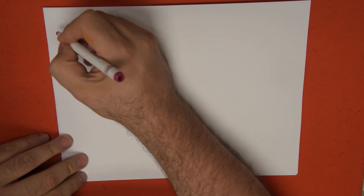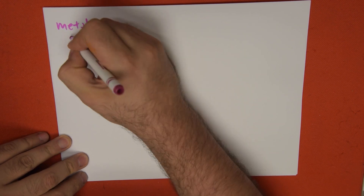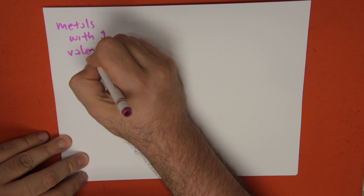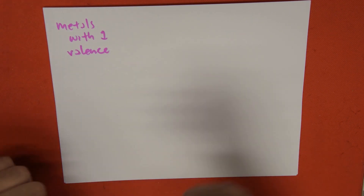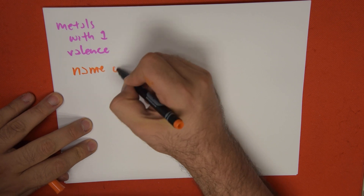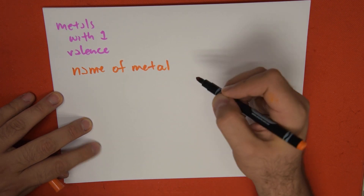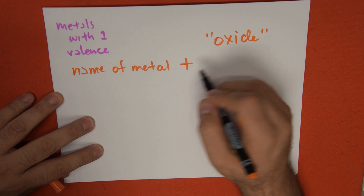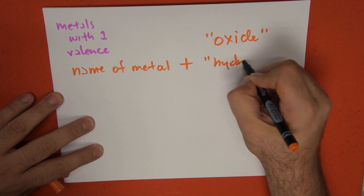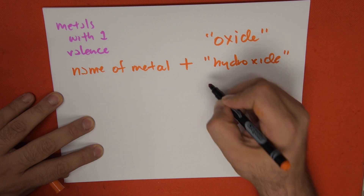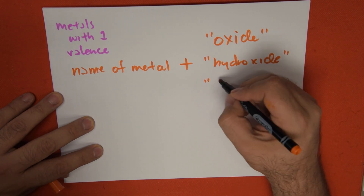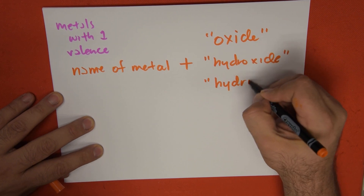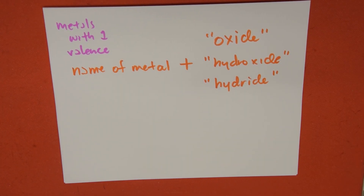The naming style is going to be exactly the same. For metals with one valence, the naming style is very simple: we just say the name of the metal, and depending on the type of anion we add the word oxide, hydroxide, or hydride.